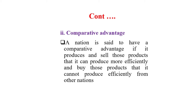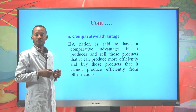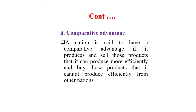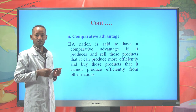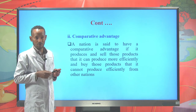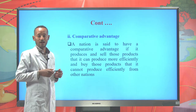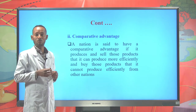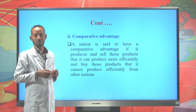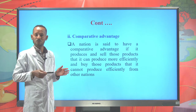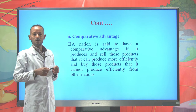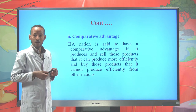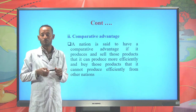Comparative advantage: a country is said to have a comparative advantage in production of a particular commodity if it can produce and export those commodities it produces more efficiently, and import those commodities it cannot produce more efficiently. Comparative advantage is a theory of international trade proposed by David Ricardo, while absolute advantage was proposed by Adam Smith. Even without an absolute advantage, countries can still benefit from international trade.